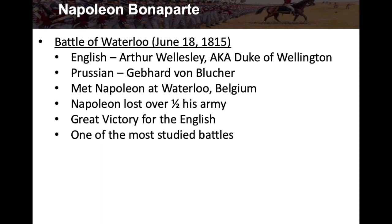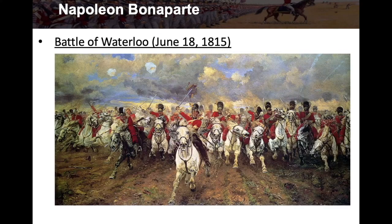The Battle of Waterloo took place across three farms next to one another on a large flat area, with a hill where Wellington positioned his forces. Various movements and maneuvers took place, making it a fairly organized battle. Military historians have studied it for generations. Here's a painting of the charge of the heavy cavalry — the British charging down the hill from their elevated position.